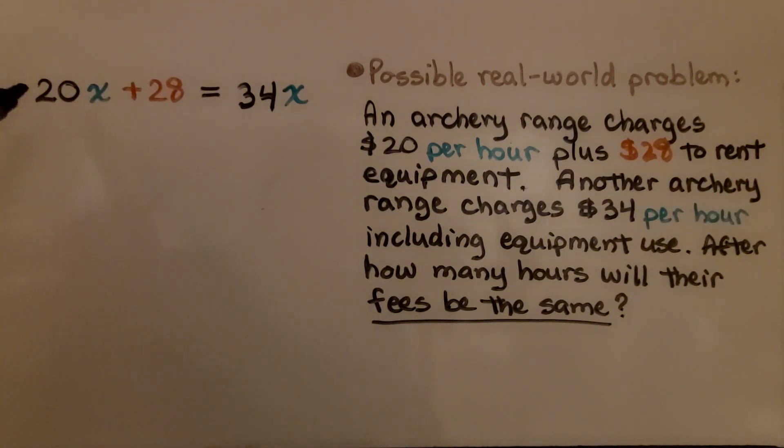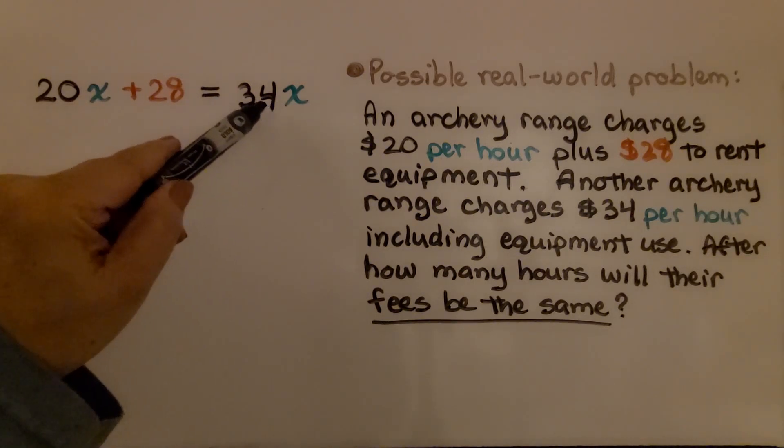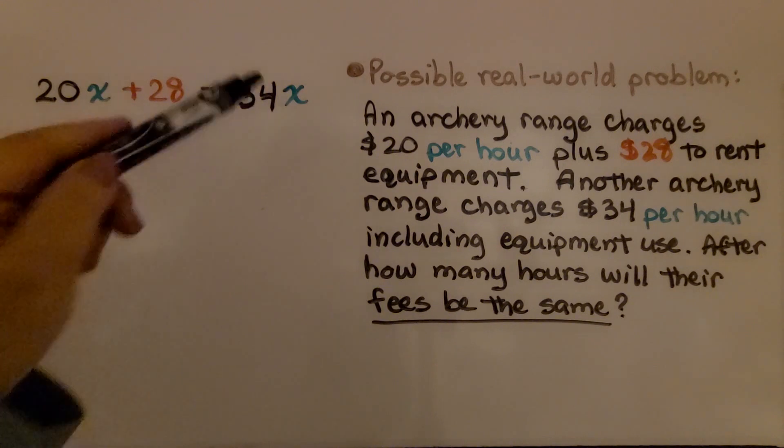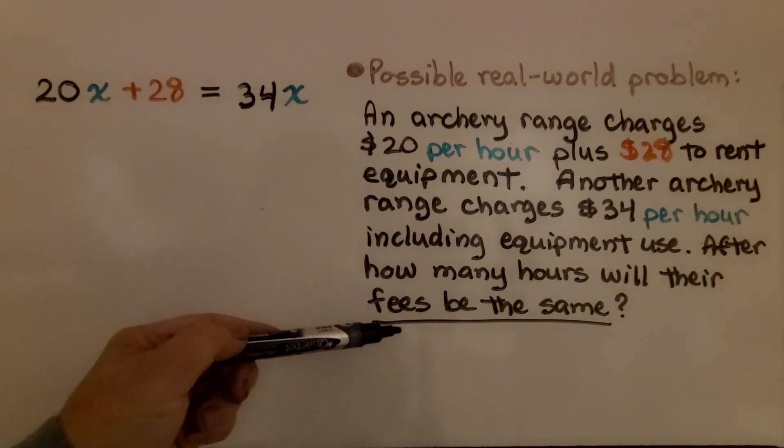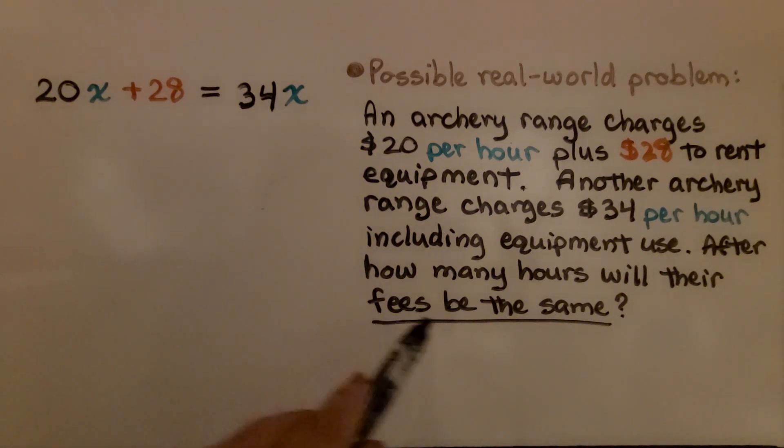So again, I've got my variable term plus that amount to rent the equipment, that constant, and I'm comparing it to another company that has a variable term as its fee. And we want to know how many hours will go by for their fees to be the same. So notice it always says to be the same down here as the last part of my word problem.